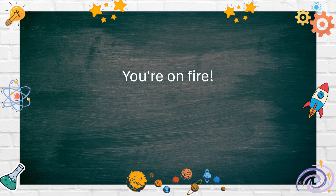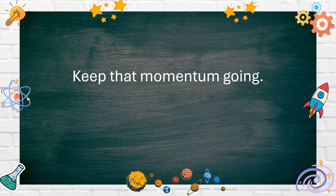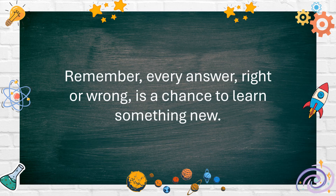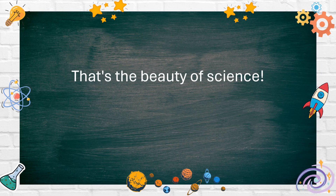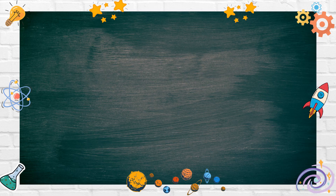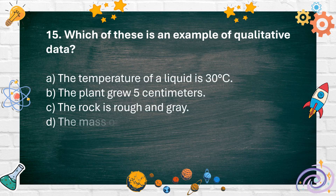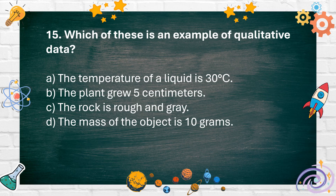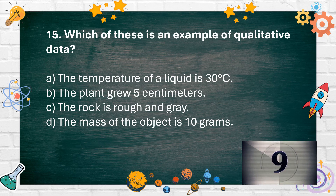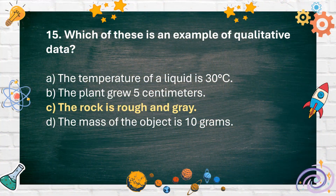You're on fire! Keep that momentum going. Remember, every answer, right or wrong, is a chance to learn something new. That's the beauty of science. Number 15. Which of these is an example of qualitative data? A. The temperature of a liquid is 30 degrees Celsius, B. The plant grew 5 centimeters, C. The rock is rough and gray, D. The mass of the object is 10 grams. The answer is C. The rock is rough and gray.